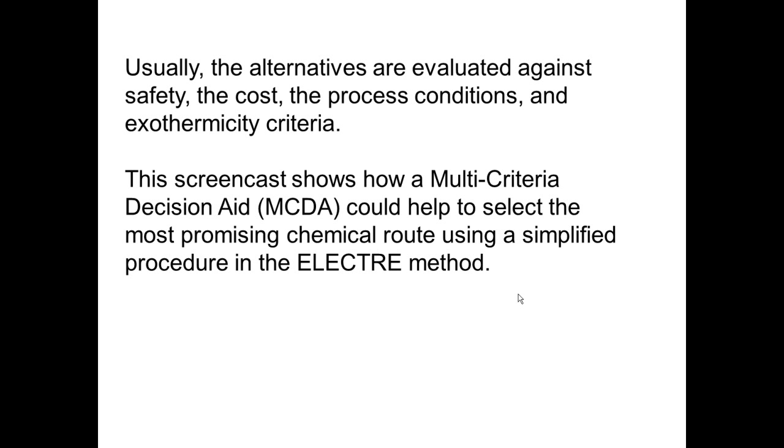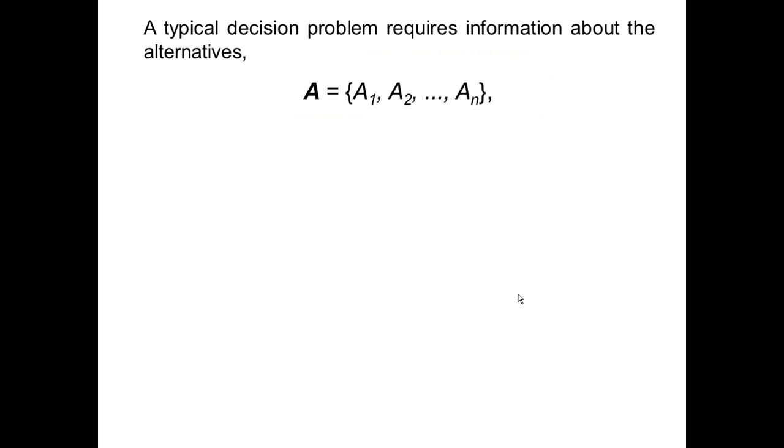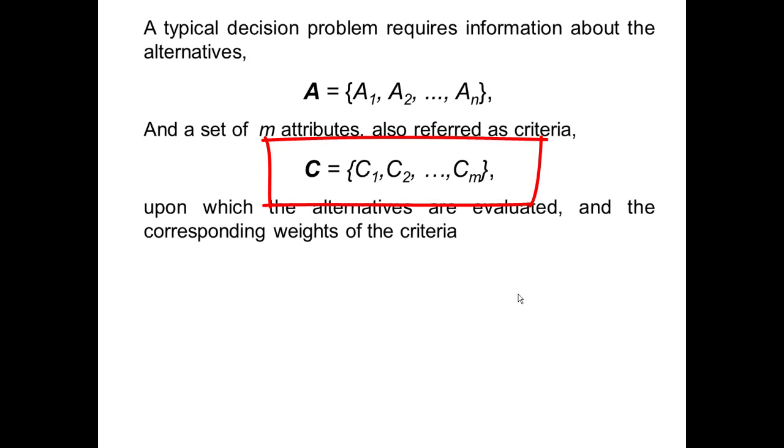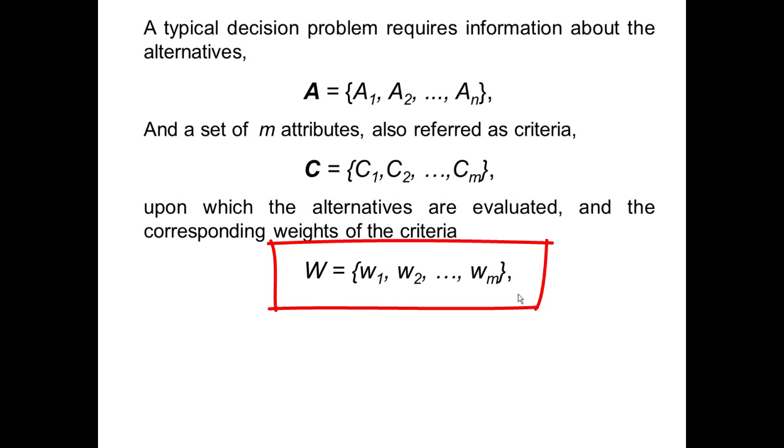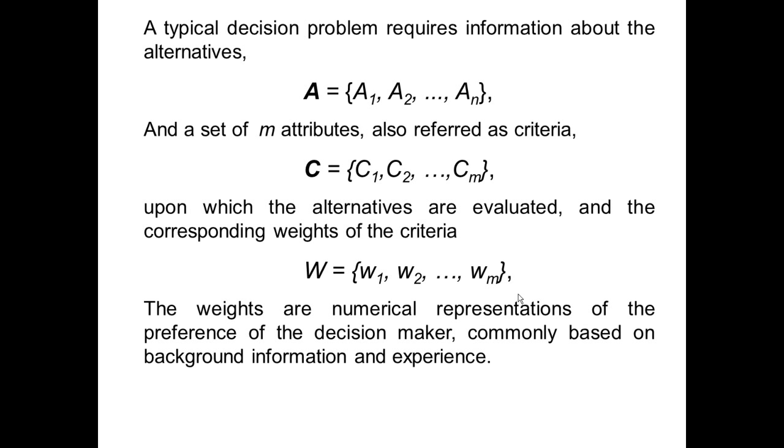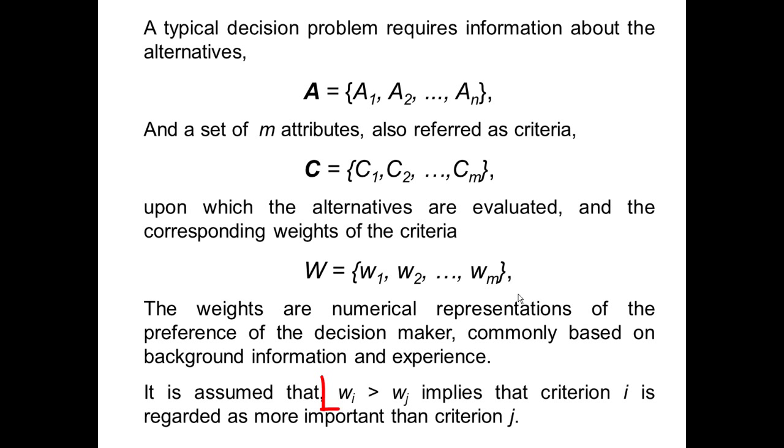A typical decision problem requires information about the alternatives and also a set of attributes, also known as criteria, upon which the alternatives are evaluated, and the corresponding weights of the criteria. The weights are numerical representations of the preference of the decision-maker, commonly based on background information and experience. It is assumed that if WI is greater than WJ, this implies that criterion I is regarded as more important than criterion J. The alternatives, criteria, and weights are the main ingredients of any decision-making procedure.